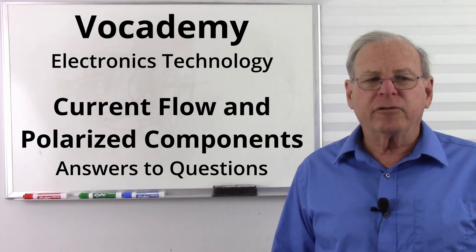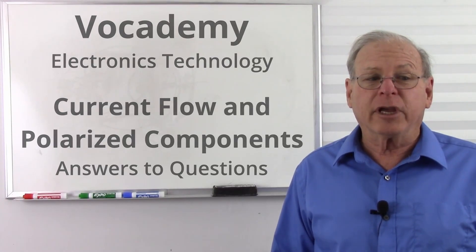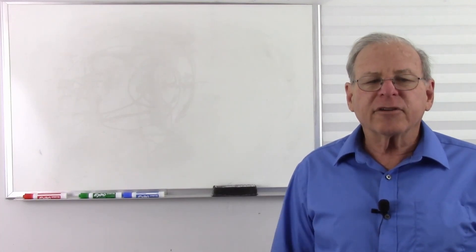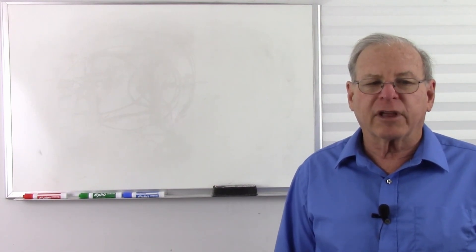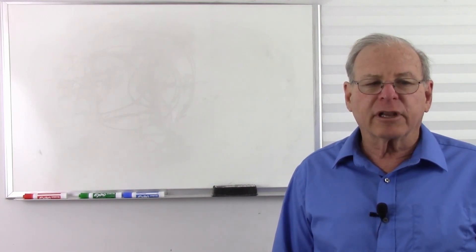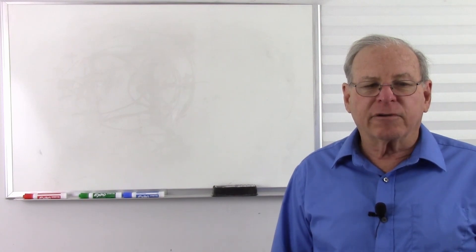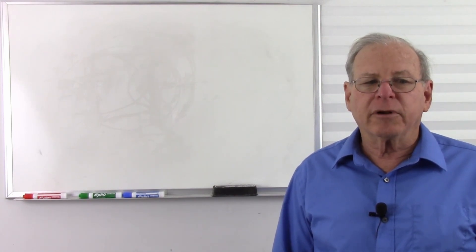Today I'm going to answer a question from a student who goes by the name of Sussex Studio. His question is, does electron flow versus conventional current flow come up as an issue in electronic circuit design using polarized components like diodes, transistors, or electrolytic capacitors, since the actual flow of electrons is one way only through these components?